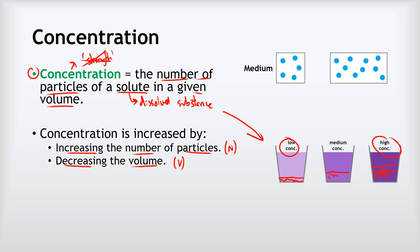Let's look at a medium concentration. These two boxes both show the same concentration. The one on the right has got more particles, yes, but it's also got double the volume. So although the number of particles has been doubled, the volume has also doubled. We've still got the same number of particles per volume, and so the concentration is the same.